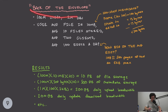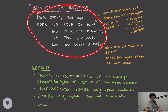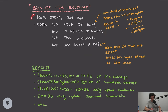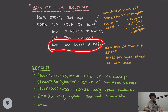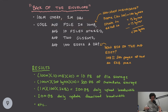Now let's do some back-of-the-envelope calculations to understand how much data our service will use. Our assumptions: 100 million users, 1 million daily active users. Average file size is 10 megabytes, average of 10 files per user, average of two clients per user — one uploading and one downloading — and 100 edits per day per user.